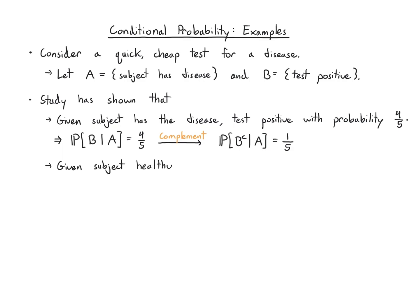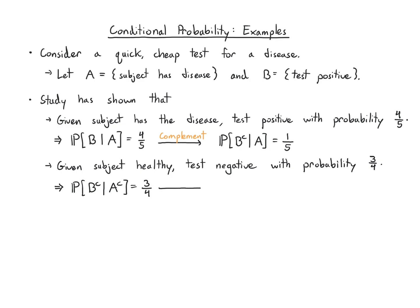Given that the subject is healthy — that's A complement — the test is negative with probability three-fourths. So the probability of B complement given A complement is three-fourths. The complement property tells us that the probability of B given A complement is one-fourth. Note that the complement property only allows us to apply the complement to the left-hand side of the conditioning; it does not allow us to modify the right-hand side.